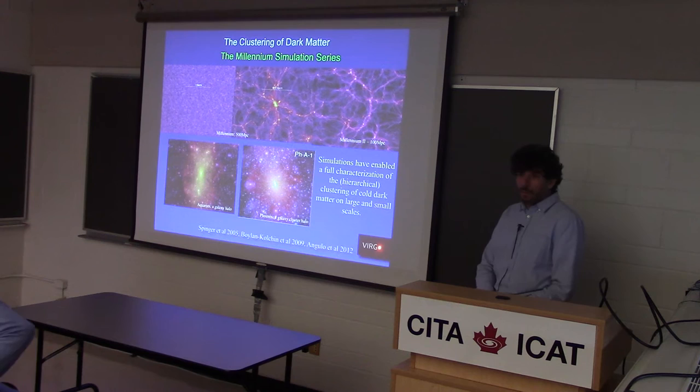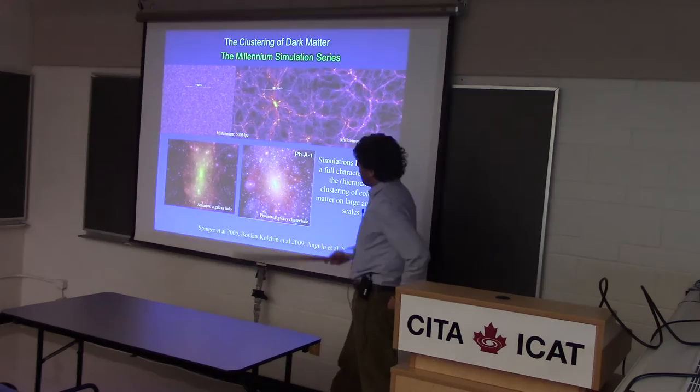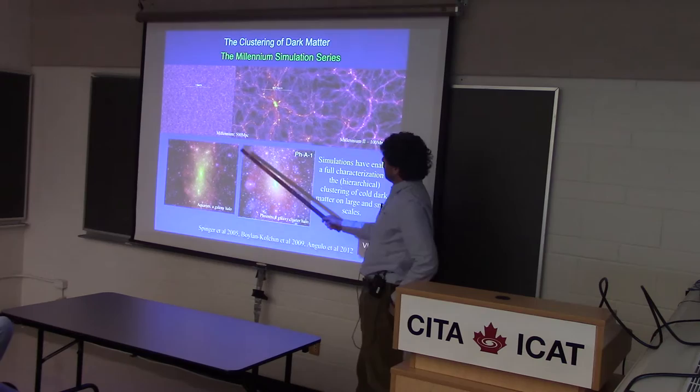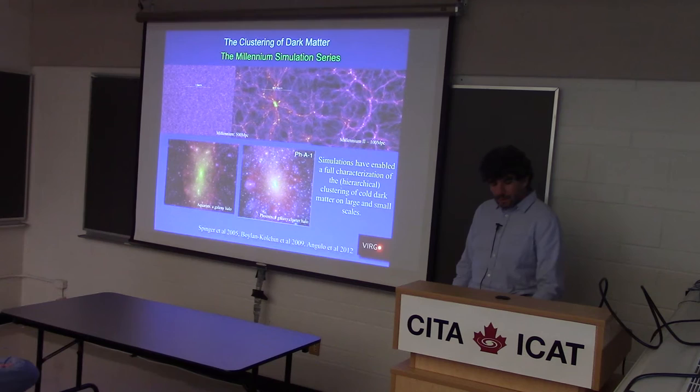Over the past couple of decades, thanks to the large investment in the development of software and hardware for numerical simulations, we've really gained an understanding of the clustering of cold dark matter — at least vanilla cold dark matter — on all scales that matter for extra-galactic astronomy. So if there were only cold dark matter in the universe and nothing else, the problem is solved. We know everything about cold dark matter, from gigaparsec horizon scales down to the scales of a single individual dark matter halo.